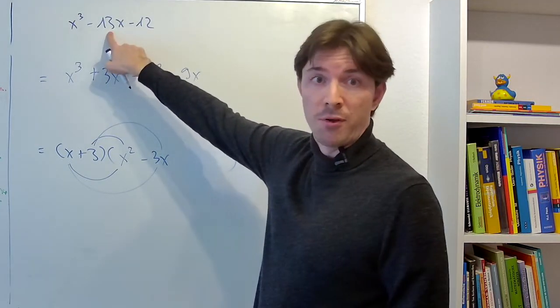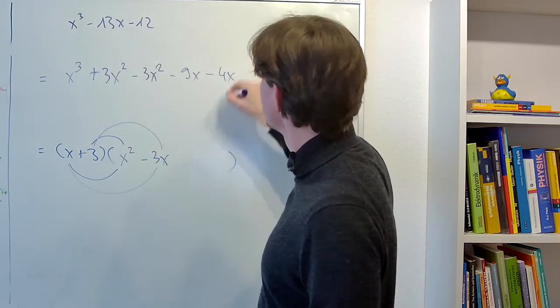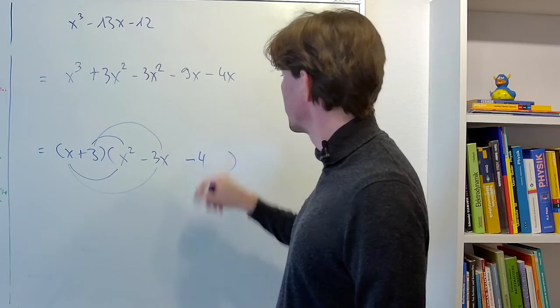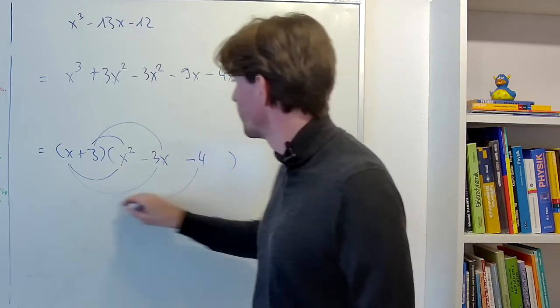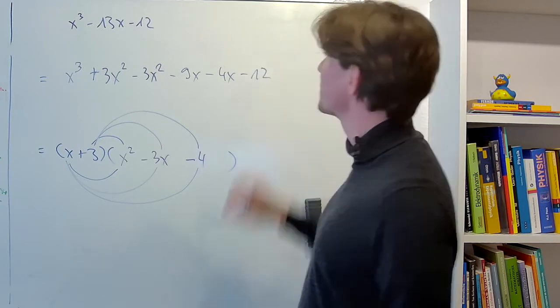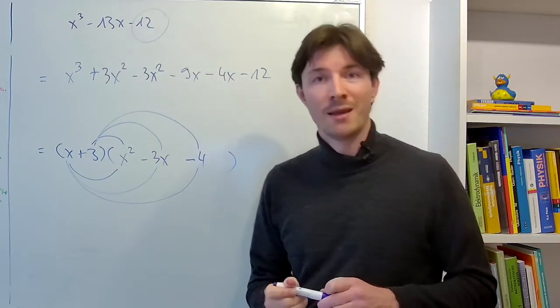But we want negative 13x in the expanded form so we need another negative 4x and the only way to get it from the factor form is with a negative 4, which incidentally also gives us minus 12. So the factorization works out. Let me know what you think.